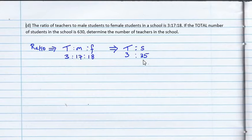Now, 35 parts actually represent the 630 students in the school. Do we know the amount of teachers? No. We're trying to find that amount. Let's use x. So, what we can do, we can set up an equation here. We can say, okay, 3 over x equals 35 over 630.